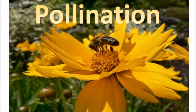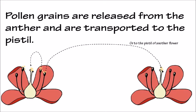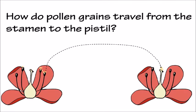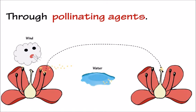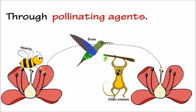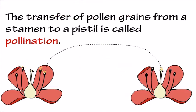Pollination. Pollen grains are released from the anther and are transported to the pistil — either to the pistil of the same flower or to the pistil of another flower. How do pollen grains travel from the stamen to the pistil? Through pollinating agents like wind and water, insects, birds, and other animals. The transfer of pollen grains from a stamen to a pistil is called pollination.